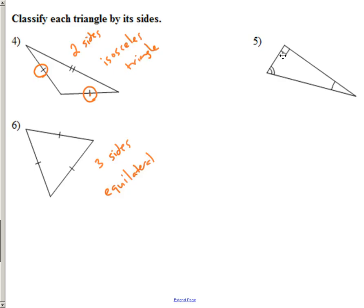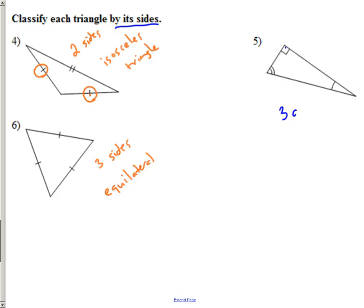Now let's come back to the skipped triangle and use angle markings to classify by sides. This angle is 90 degrees. The second angle has two arc lines, and the third has three arc lines — like tick marks but for angles, showing all three angles are different. If all three angles are different, then all three sides are different lengths, making it a scalene triangle.